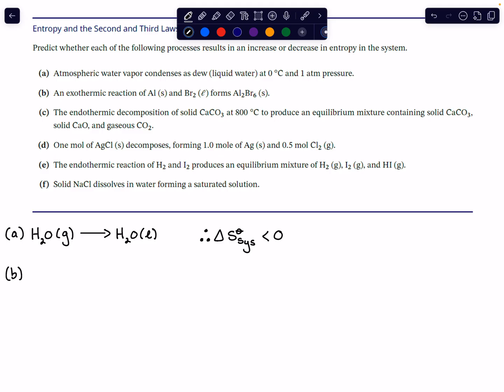The next process is an exothermic reaction of aluminium solid and bromine liquid to form aluminium bromide solid. The reaction is: 2Al(s) + 3Br₂(l) → 2AlBr₃(s). We're also given that it's exothermic, but that's not too relevant at the moment because we're looking at the system. The exothermicity will dictate something about what happens to the entropy change of the surroundings — whether heat is released or absorbed will affect the surroundings.